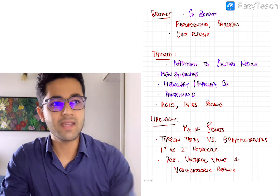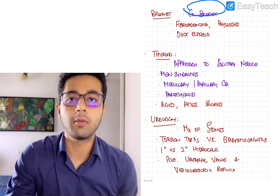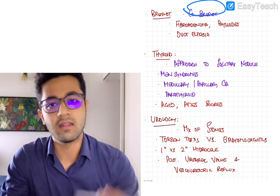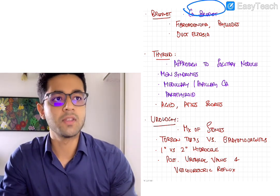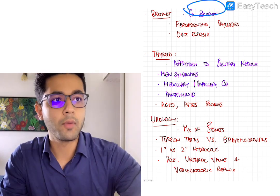Next, breast. So in breast, I think CA breast is the most important. So knowing everything about CA breast is necessary. It's diagnosis, the investigations done, treatments, different types of mastectomy. So basically, CA breast is very important. So make sure you read that.